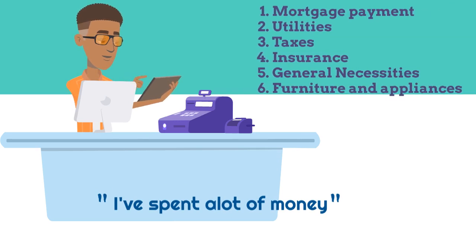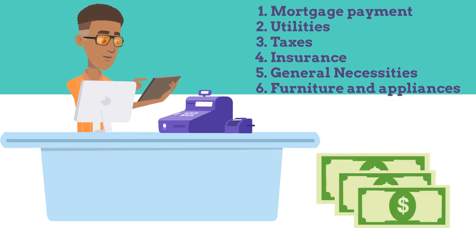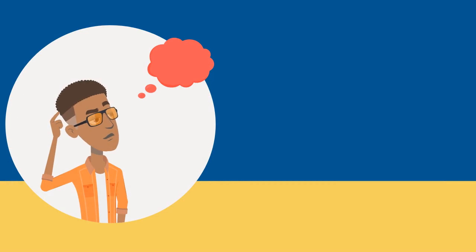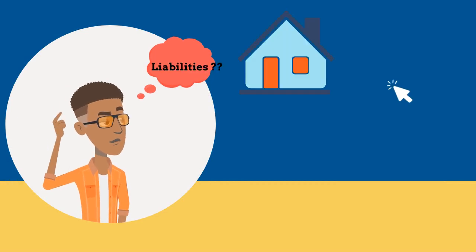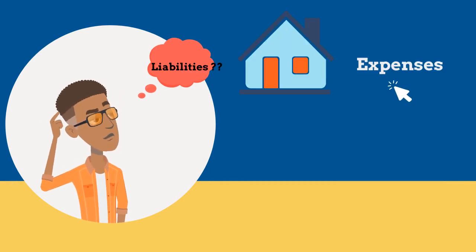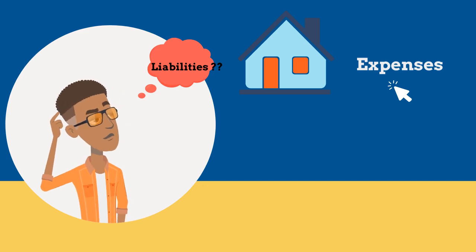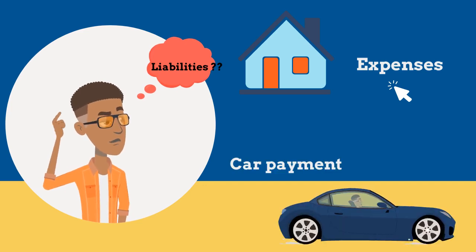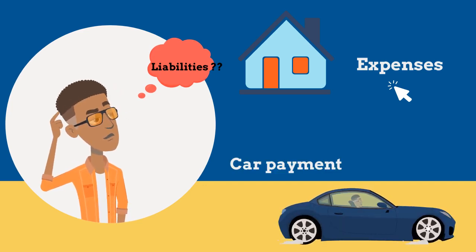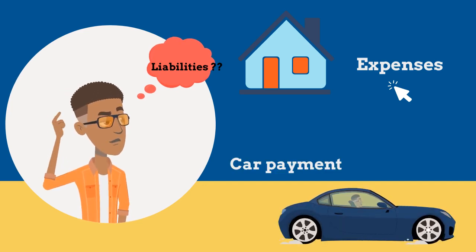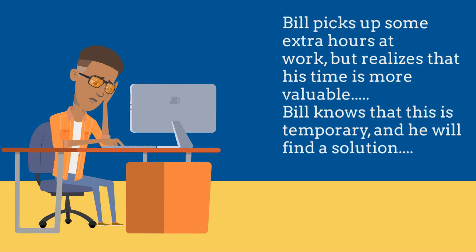As Bill does his monthly budget, he realizes he is spending a lot of money — not to mention just the mortgage payment, utilities, taxes, insurance, and general necessities. He realizes that this home is a liability with all the expenses, and not to mention his car sitting in the driveway.